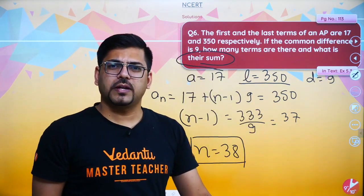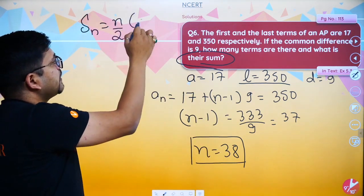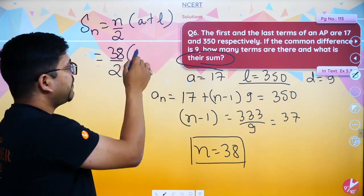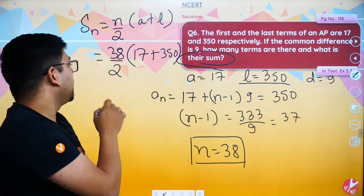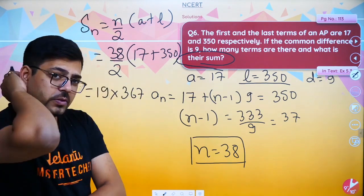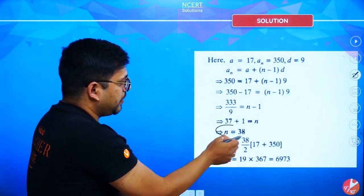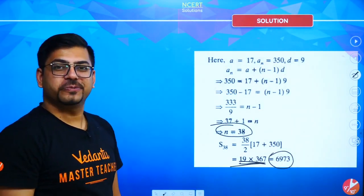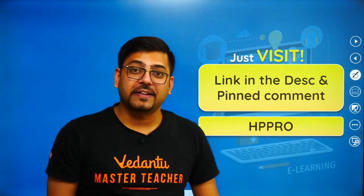Now the number of terms is 38, we need to find the sum. The sum formula is SN equals N by 2 into A plus L. So N is 38, 38 by 2 into A. First term is 17, last term is 350. So 19 into 17 plus 350. 17 plus 350 is 367. Now we have to multiply 19 into 367. The final answer is 6973. That's the sum.